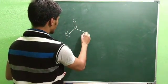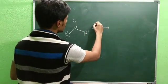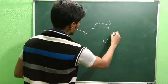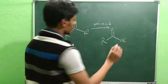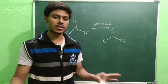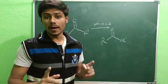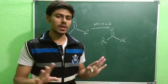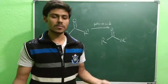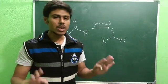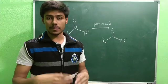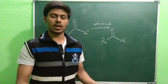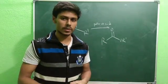Baeyer-Villiger oxidation is basically when you have a ketone, for example R and R', and if you treat it with a peracid, what you will get is an ester. So this is the Baeyer-Villiger oxidation. You are all familiar with the mechanism and several examples, but in this video I will discuss three examples which you may not know, but for competitive exams and your organic chemistry knowledge you should know these three reactions and the explanation of their product formation.